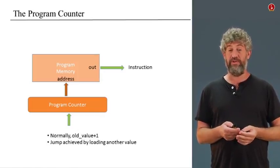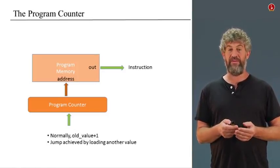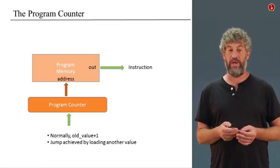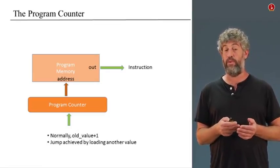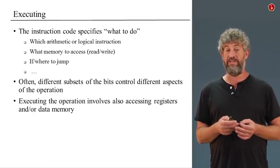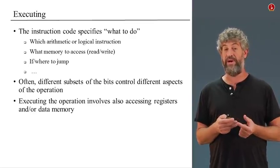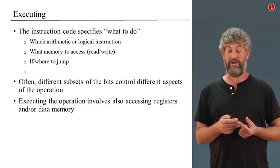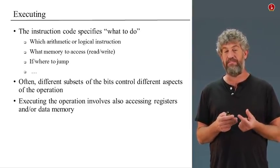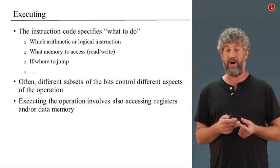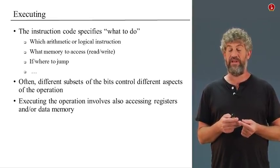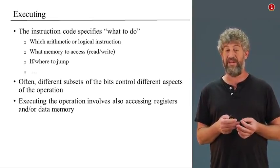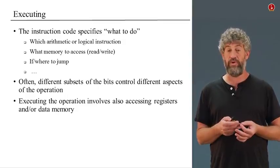Once we have the code of the instruction, now we need to execute it. The instruction code itself has all the specifics of what we're going to do: which calculations to perform, are we touching this register or that register, and whether we need to jump afterwards. All that information is coded inside the instruction we fetched. Usually the way it's coded is that different parts of the instruction bits control the different parts of what we need to do. Executing the current instruction basically means taking the bits from the instruction code that specify what to do and actually doing what needs to be done.